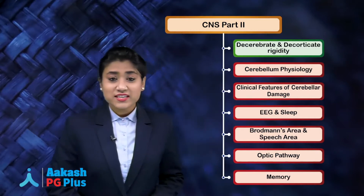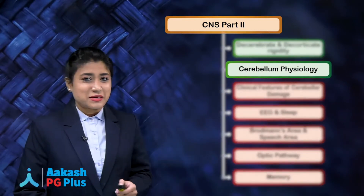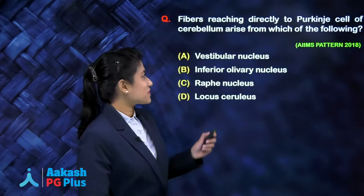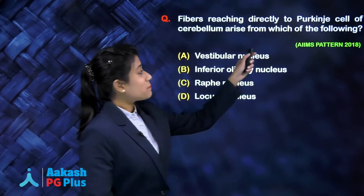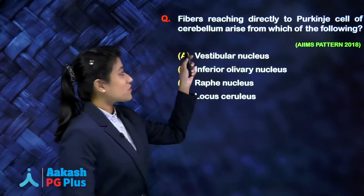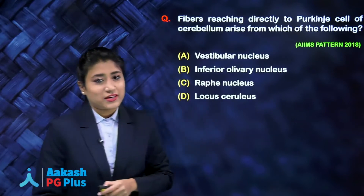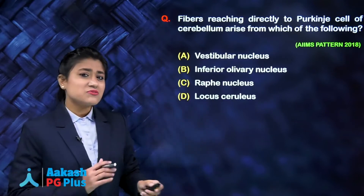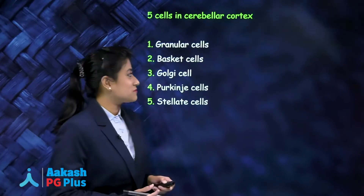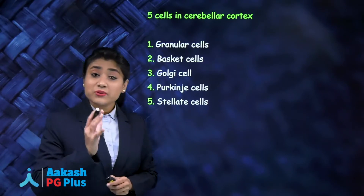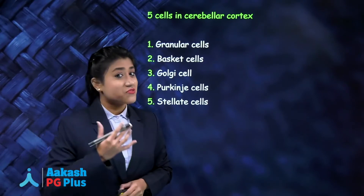We will start with the physiology of the cerebellum. The question is: fibers reaching directly to the Purkinje cells of the cerebellum arise from which of the following? First, we will quickly go through the physiology. There are five cells in the cerebellar cortex.